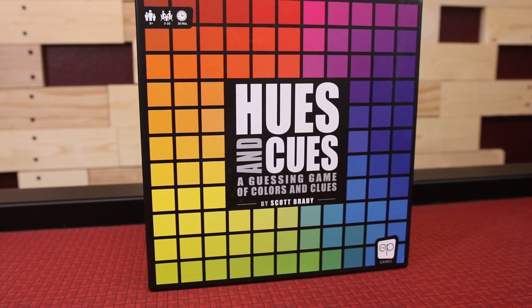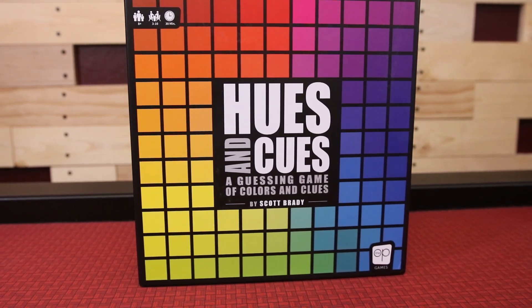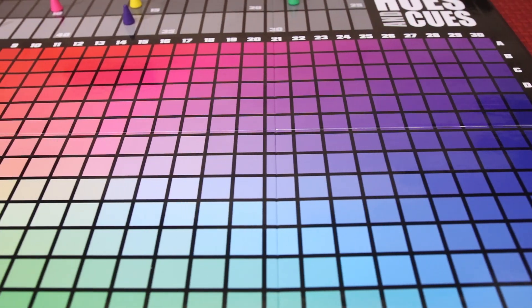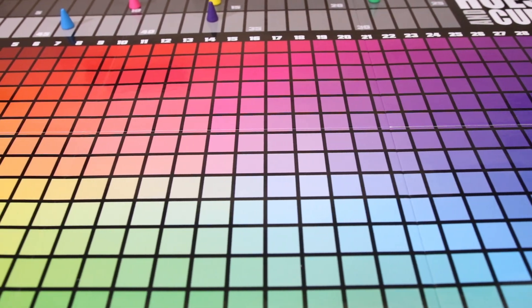Hues and Cues is a game of colorful clue giving for three to ten players. Players will take turns being the cue giver, providing one and then possibly two word clues that will help point players in the direction of a specific color on the board.